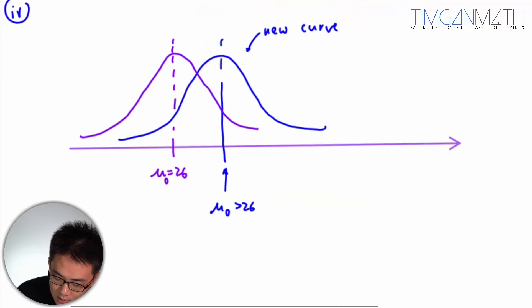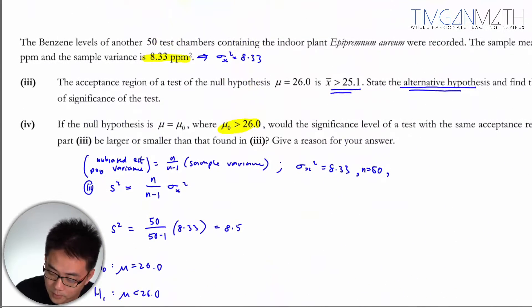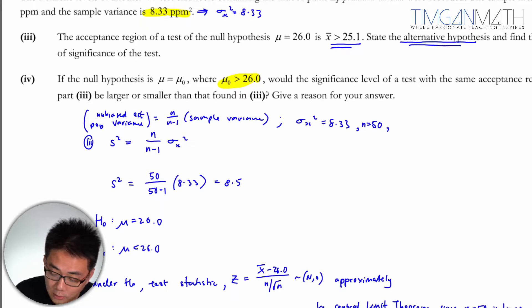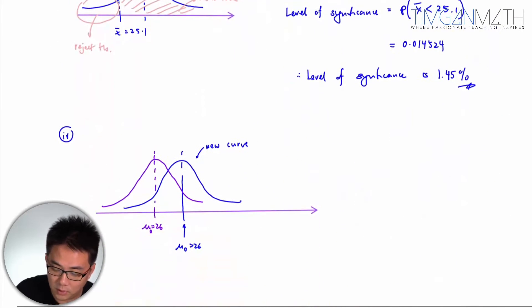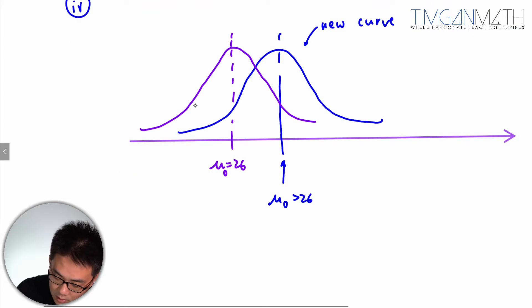Which is actually mu naught more than 26. Great. Now the question now is, would the levels, you have the same boundary, so with the same acceptance region, the same acceptance region would be 25.1. So we're going to use the 25.1 here, so, there we go one here. So this is basically the alpha percentage in three.